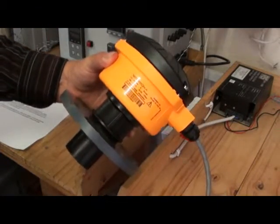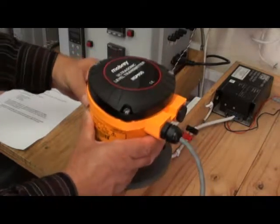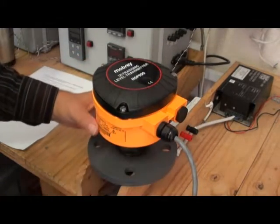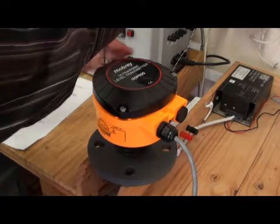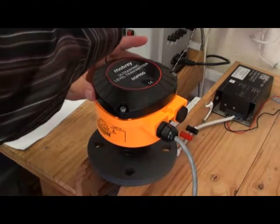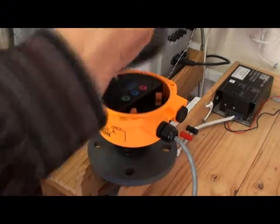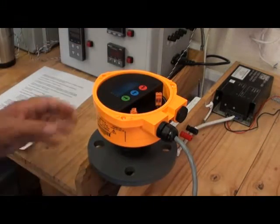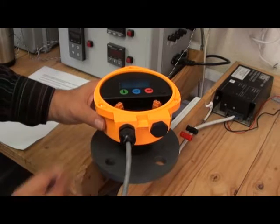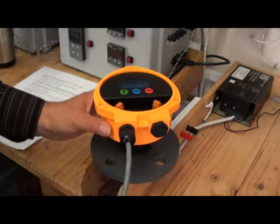The operating range is from 0.3 to 11 metres. The display can be programmed to show continuous measurement of level, distance to the surface, or tank volume.